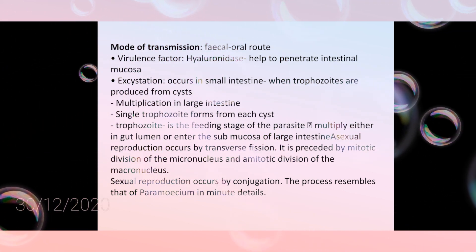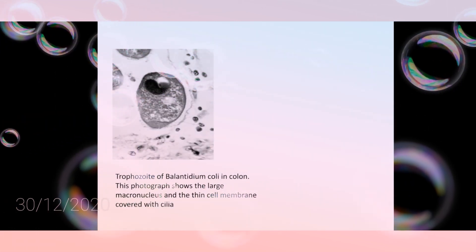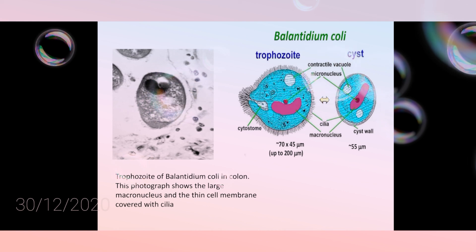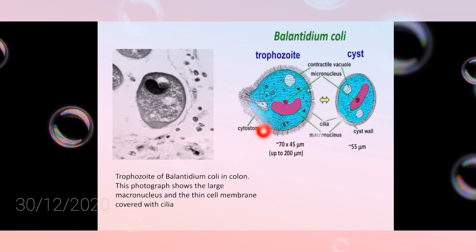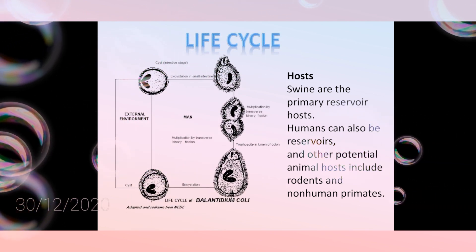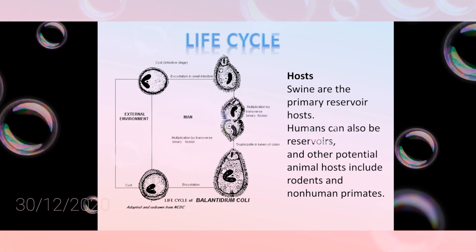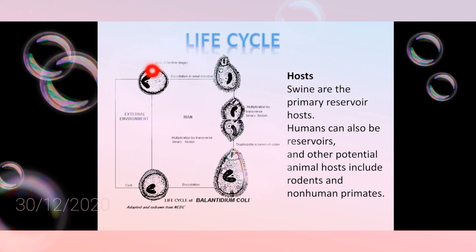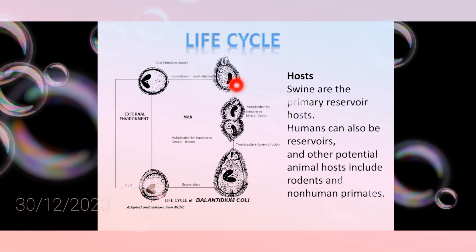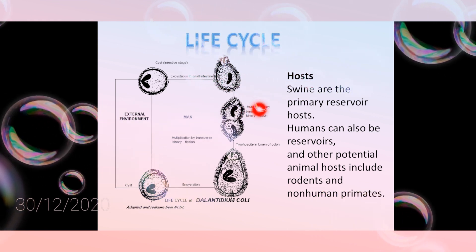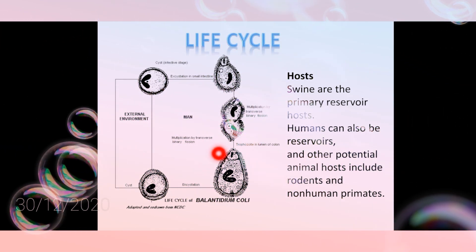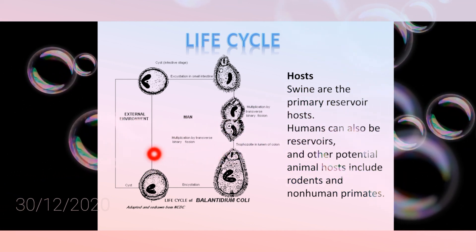Balantidium coli undergoes asexual and sexual reproduction. Here you can see the trophozoite photograph and the diagram showing the trophozoite and cyst. Swines are the primary reservoir host; humans can also be the reservoir host, and rodents are also potential hosts. Cysts present in the environment are ingested by humans, releasing trophozoites which undergo binary fission by transverse division, forming more trophozoites, then undergoing encystation, and the cysts are released back to the environment.